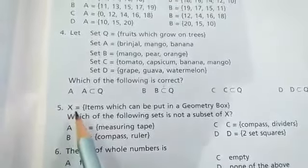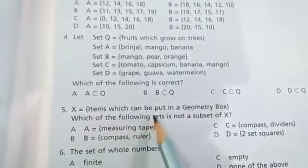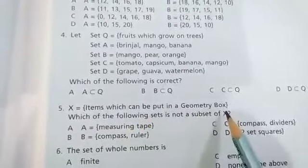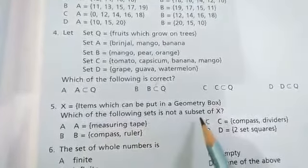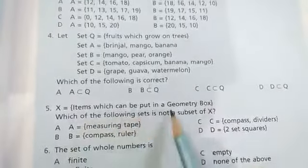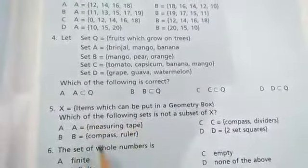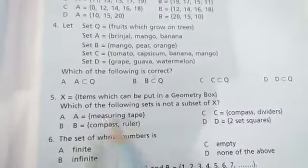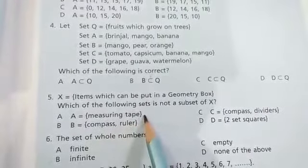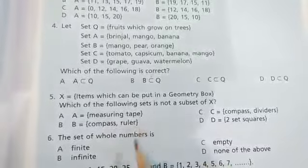Number 5: X = {items which can be put in a geometry box}. Which of the following set is not a subset of X? Set X is given. So option number A = {measuring tape}. Option A is the correct answer. This is not a subset of X.